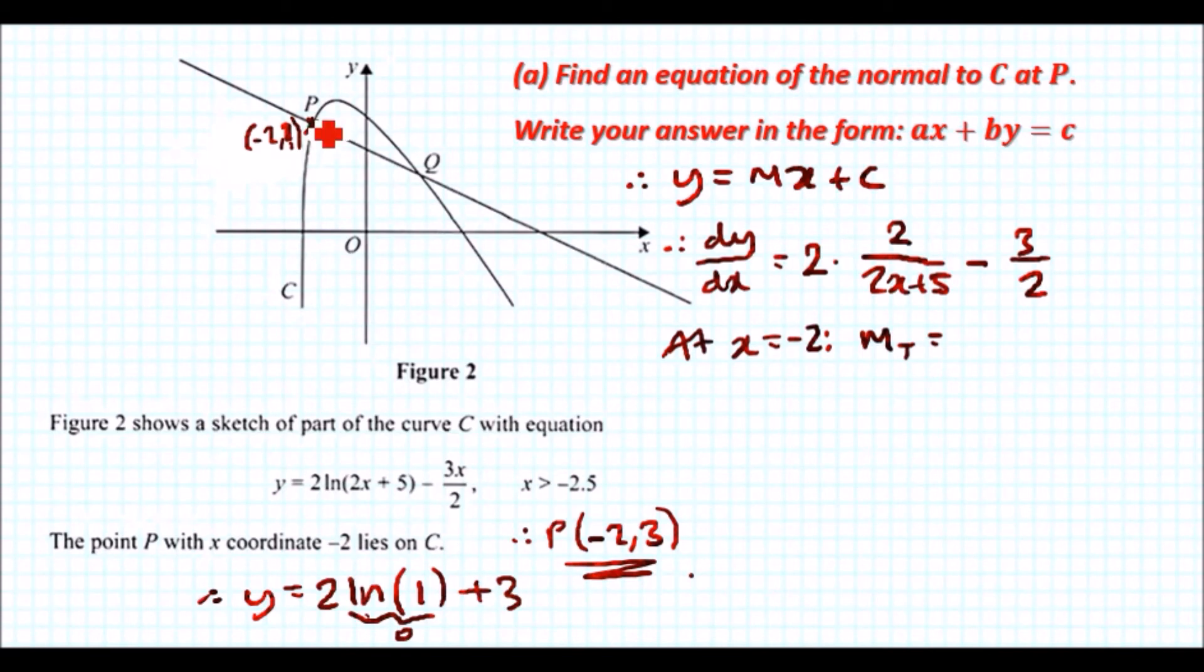This gives us 5 over 2, which is the tangent gradient. To find the perpendicular gradient for the normal, we take the reciprocal and flip the sign, giving us minus 2 over 5. Now we plug all these values back into y = mx + c to solve for c.